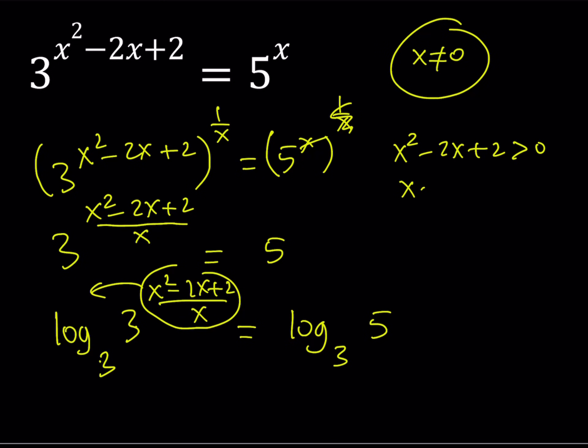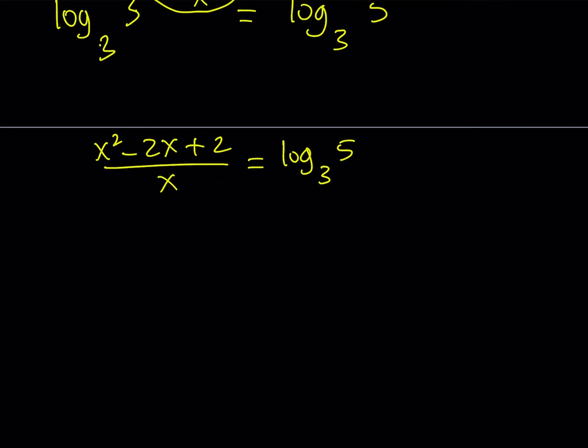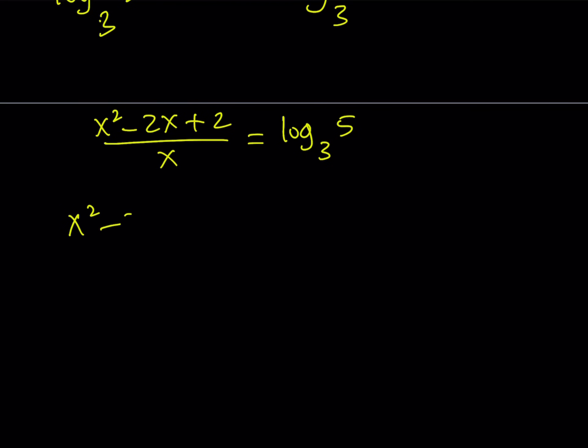notice that the left hand side is actually always positive. Because this can be written as x minus 1 squared plus 1. And as you know, this is greater than or equal to 1. Therefore, it's always a positive quantity, which means it can never be 0.